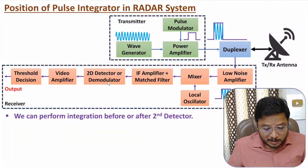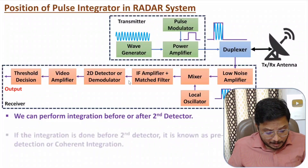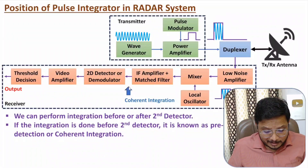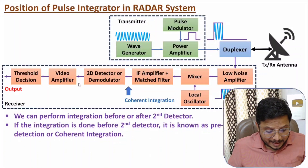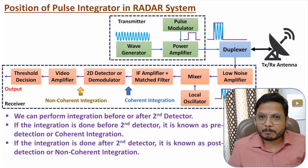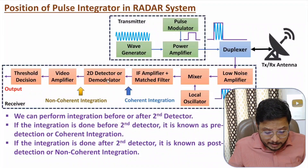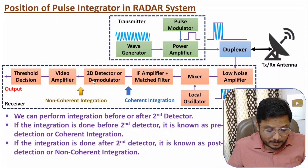The second detector is the demodulator. Its input is provided by the IF amplifier plus match filter. If you place the integrator before the second detector, that is called pre-detection integration, referred to as coherent integration. If you place the integrator after the second detector, that is referred to as non-coherent integration, or post-detection integration.